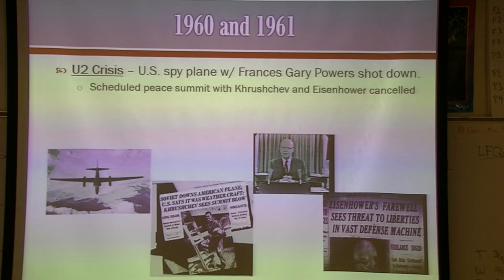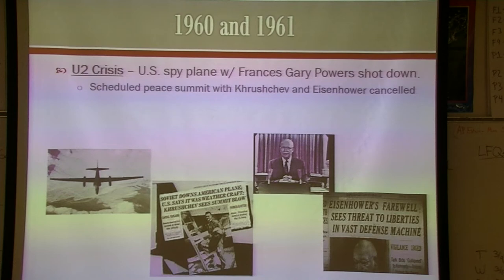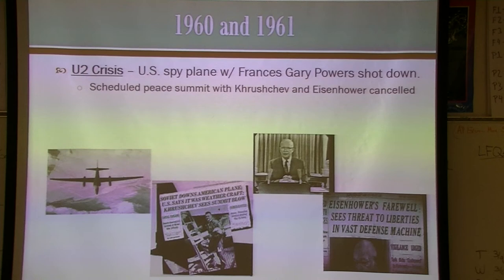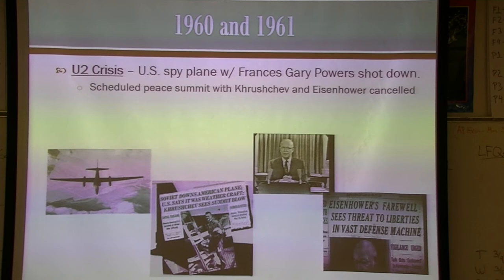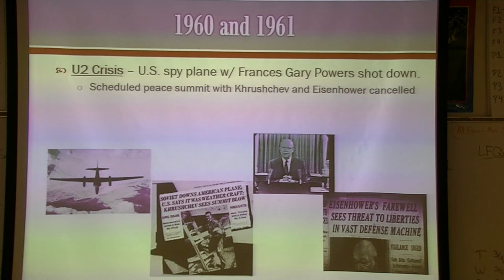By 1960, things were getting very tense in the Cold War. A U-2 spy plane was shot down — the Soviet Union said they shot it down, we denied it, they showed us wreckage, we still denied it, then they produced our pilot Gary Francis Powers. We did a trade for a spy we had captured. The bigger consequence was that Khrushchev and Eisenhower were supposed to have a peace conference to ease Cold War tensions, but it was canceled. The next few years became the height of the Cold War — Bay of Pigs, Cuban Missile Crisis, and escalation in Vietnam.